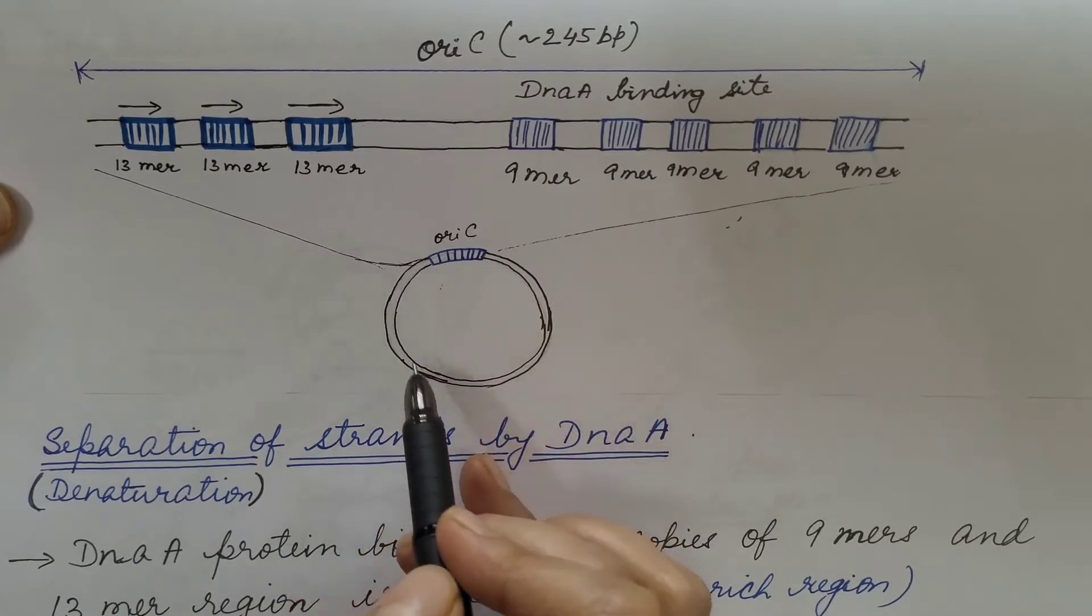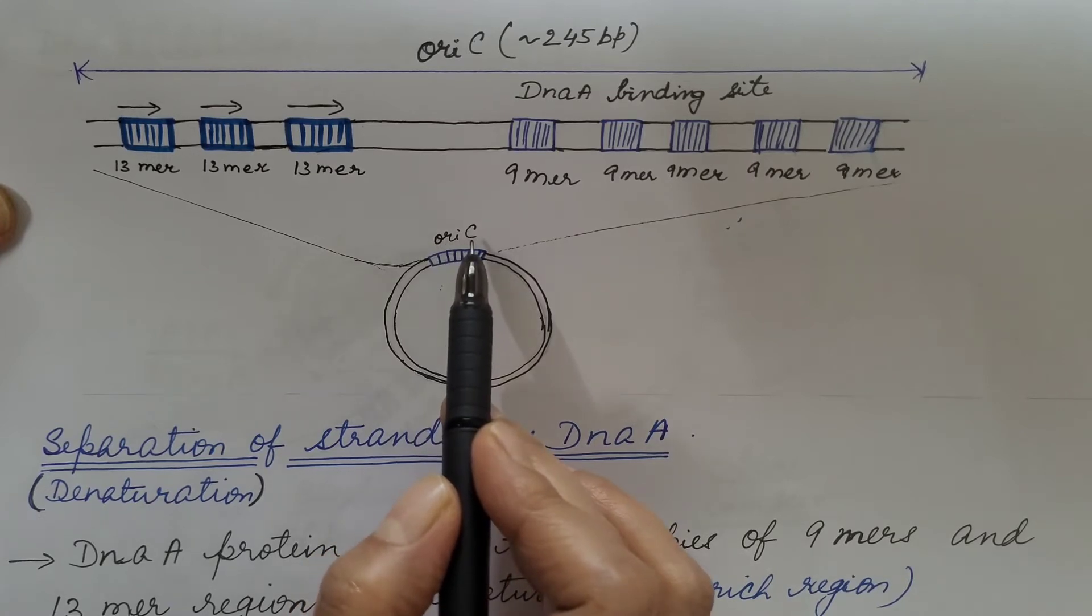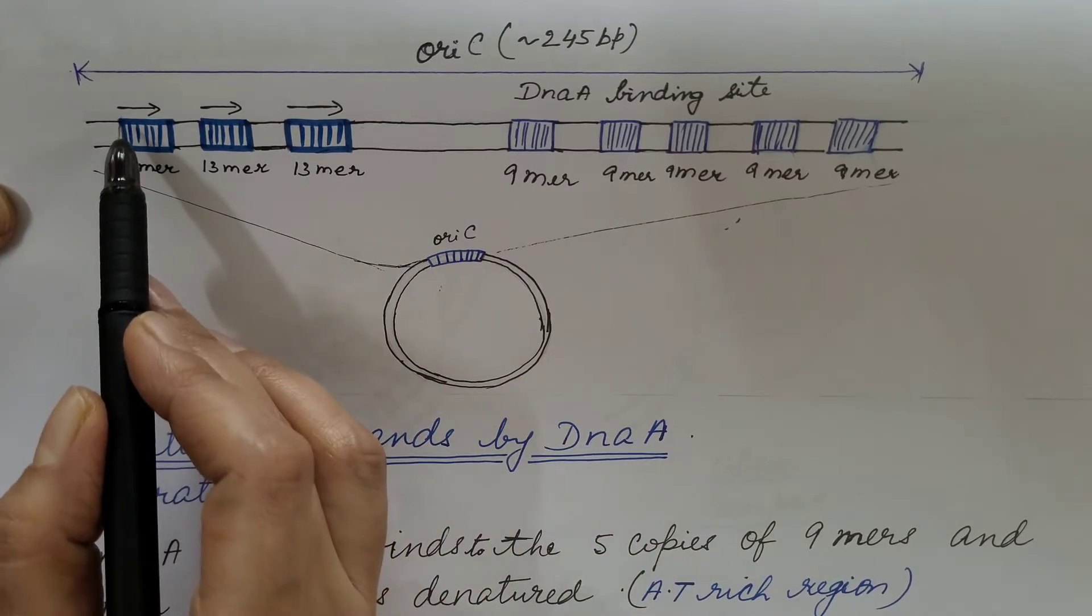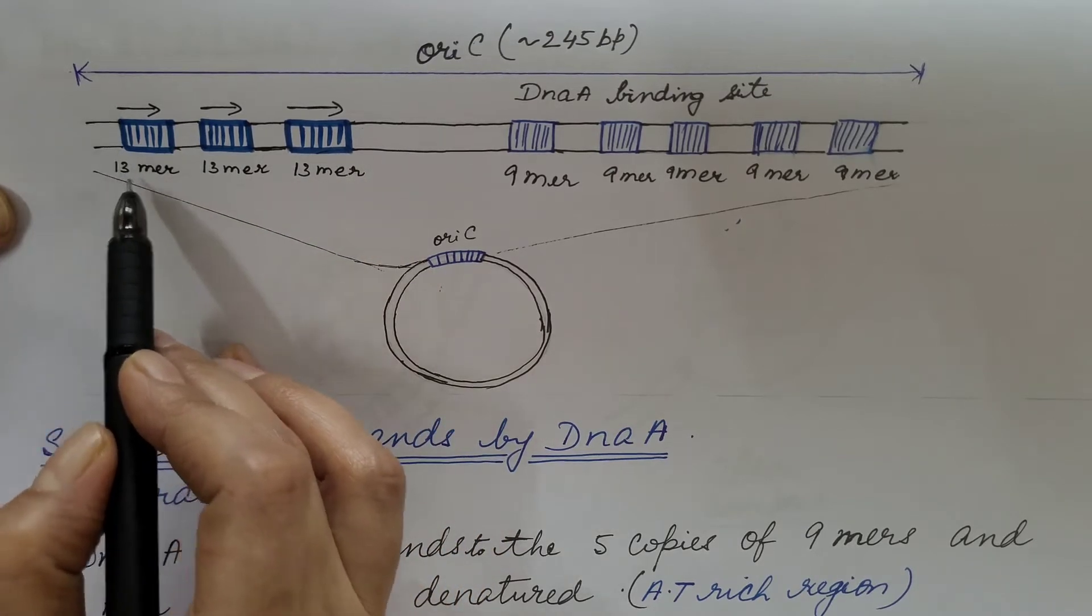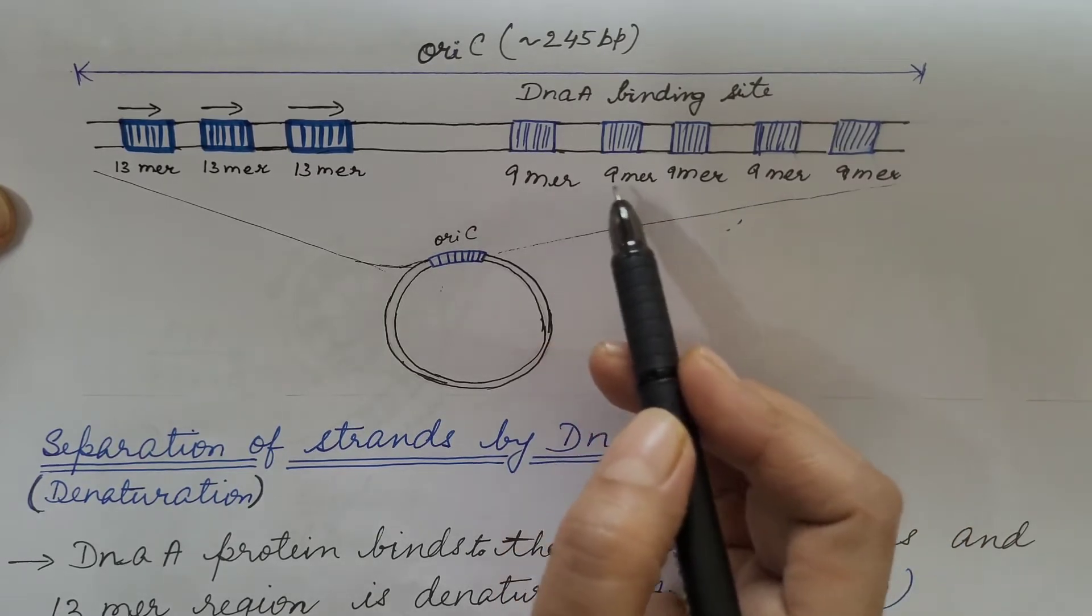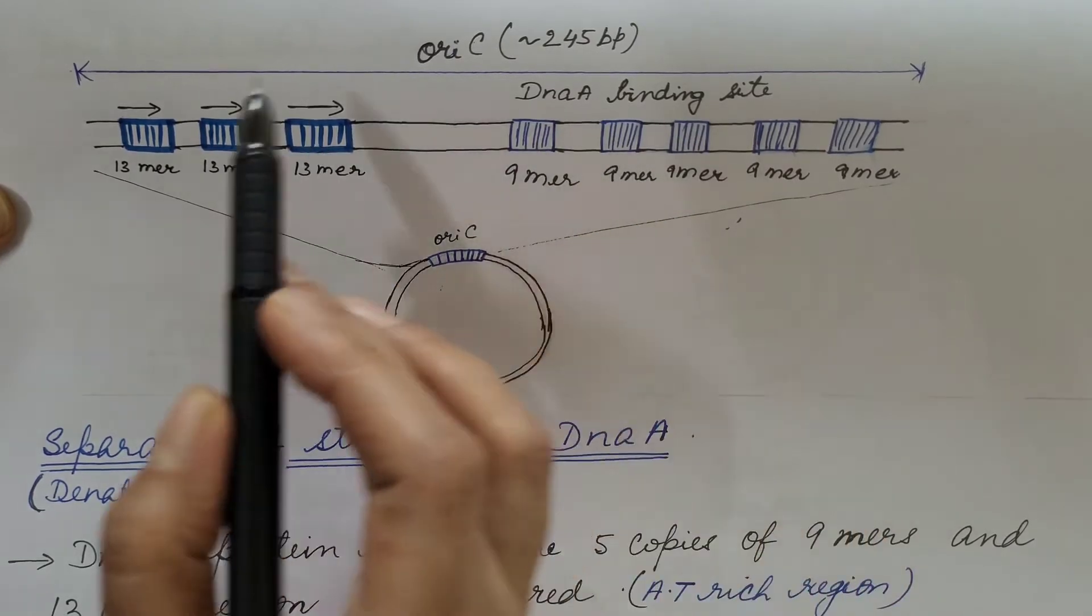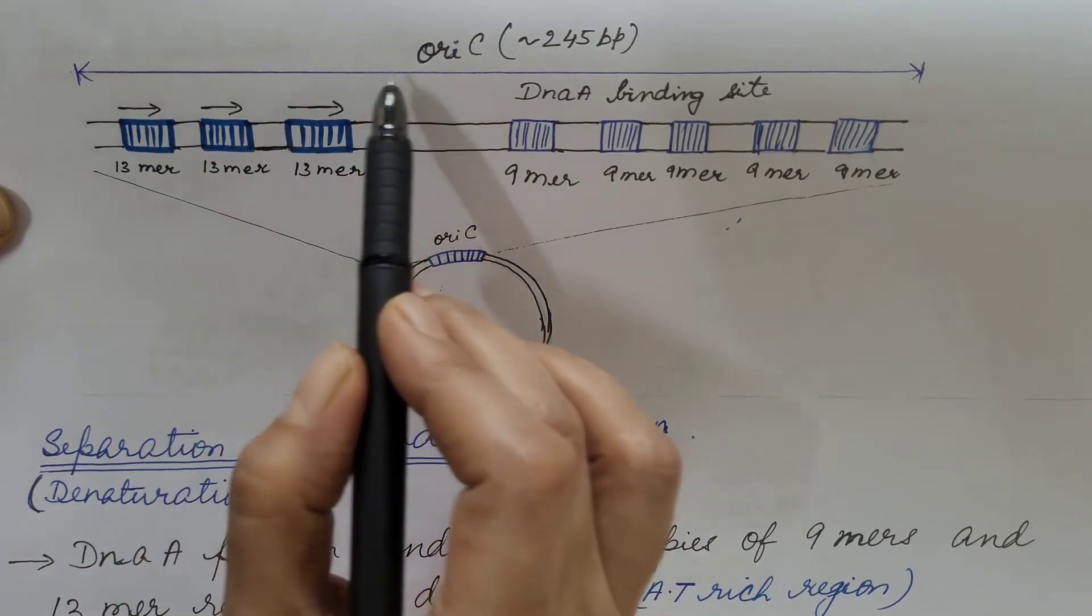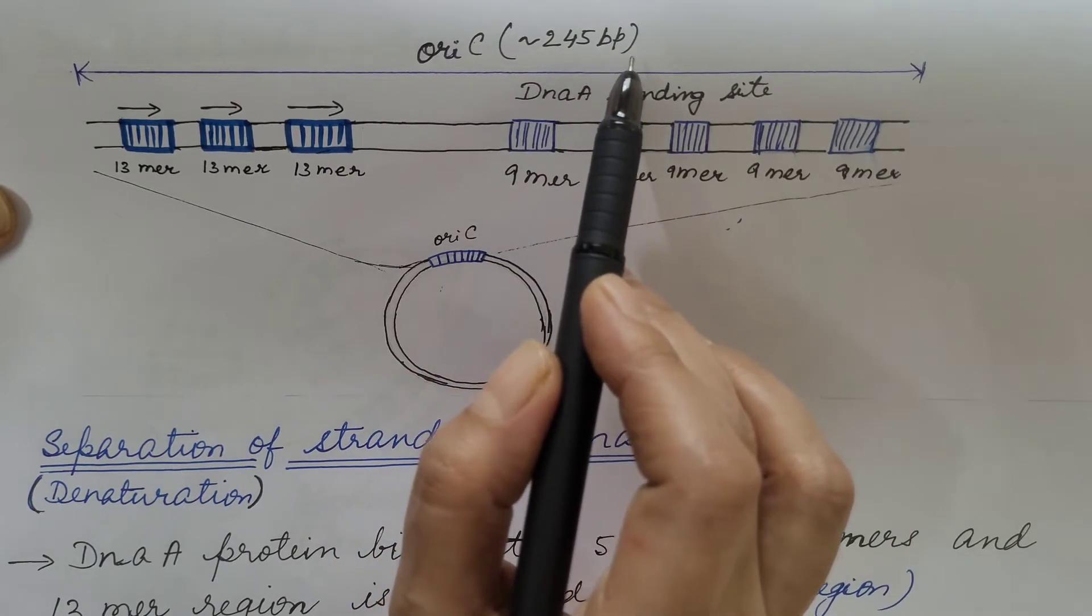So this is the E.coli chromosome. This is the origin of replication known as OriC. Let us see its enlarged view. There are 3 copies of 13 nucleotide base pairs which is known as 13-mer and 5 copies of 9 nucleotide base pair repeats known as 9-mer. These 9-mer serves as the DNA-A binding site and this is the site where the two strands separate and this origin of replication is approximately 245 base pair long.